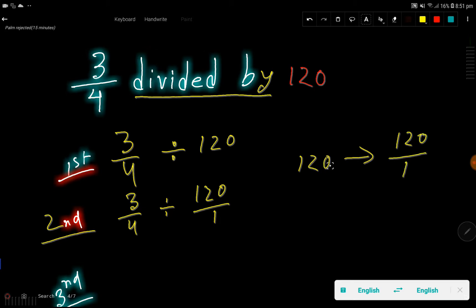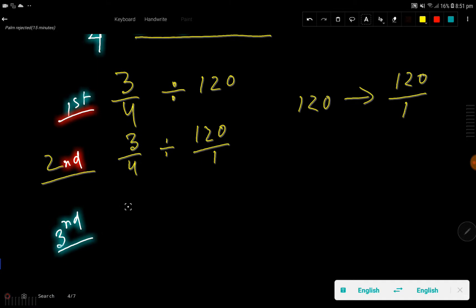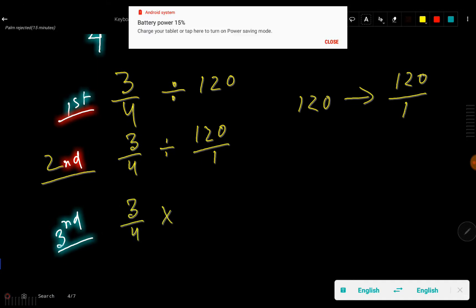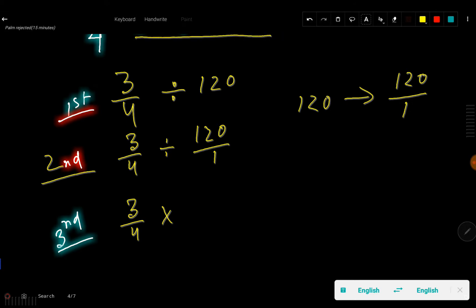So look here, in the third step I will change this division sign to a multiplication sign, and I have to take the reciprocal of this fraction, that is 1 over 120.